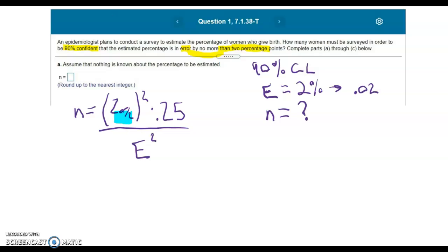We do not know the critical value. But we have the tools to find the critical value. We're finding the critical value associated with a 90% confidence level.